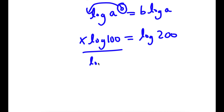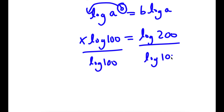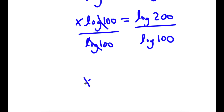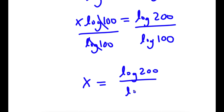Now, I'm going to divide both sides by log 100. So then these two cancel out, and now I have x is equal to log 200 over log 100.